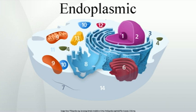The endoplasmic reticulum is a type of organelle in the cells of eukaryotic organisms that forms an interconnected network of flattened, membrane-enclosed sacs or tubes known as cisternae. The membranes of the ER are continuous with the outer membrane of the nuclear envelope. Endoplasmic reticulum occurs in most types of eukaryotic cells, including the most primitive giardia, but is absent from red blood cells and spermatozoa.